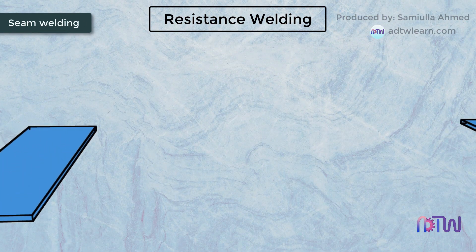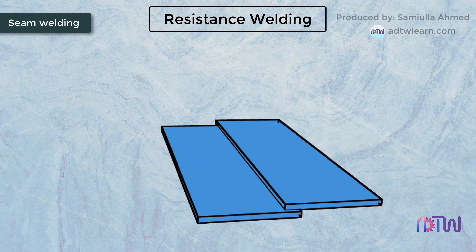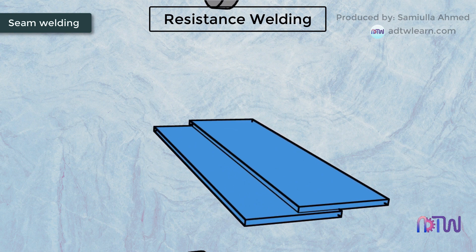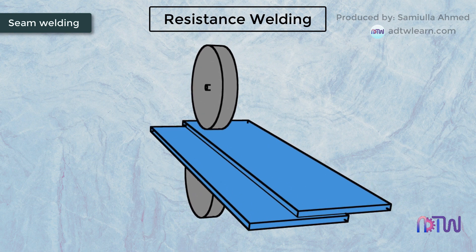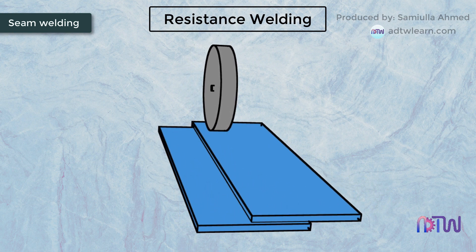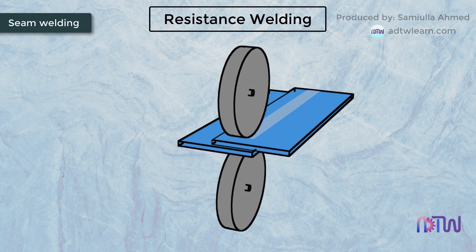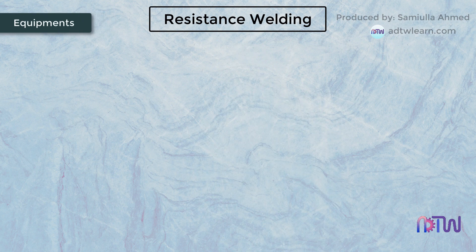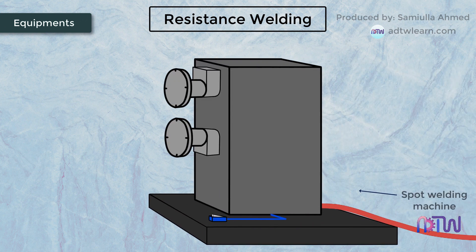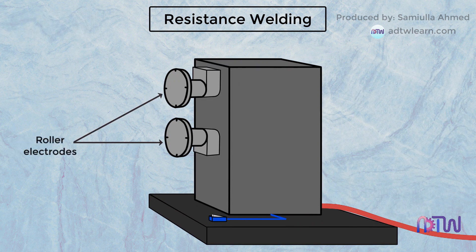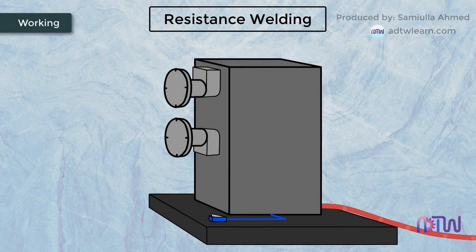Seam welding: In seam welding, the workpiece is supported on both sides by a pair of electrodes. These electrodes are in the form of rollers to produce a continuous weld on the workpiece. Continuous spot welding is known as seam welding. The working principle of seam welding is similar to that of resistance spot welding. Equipment used: seam welding machine and roller electrodes.